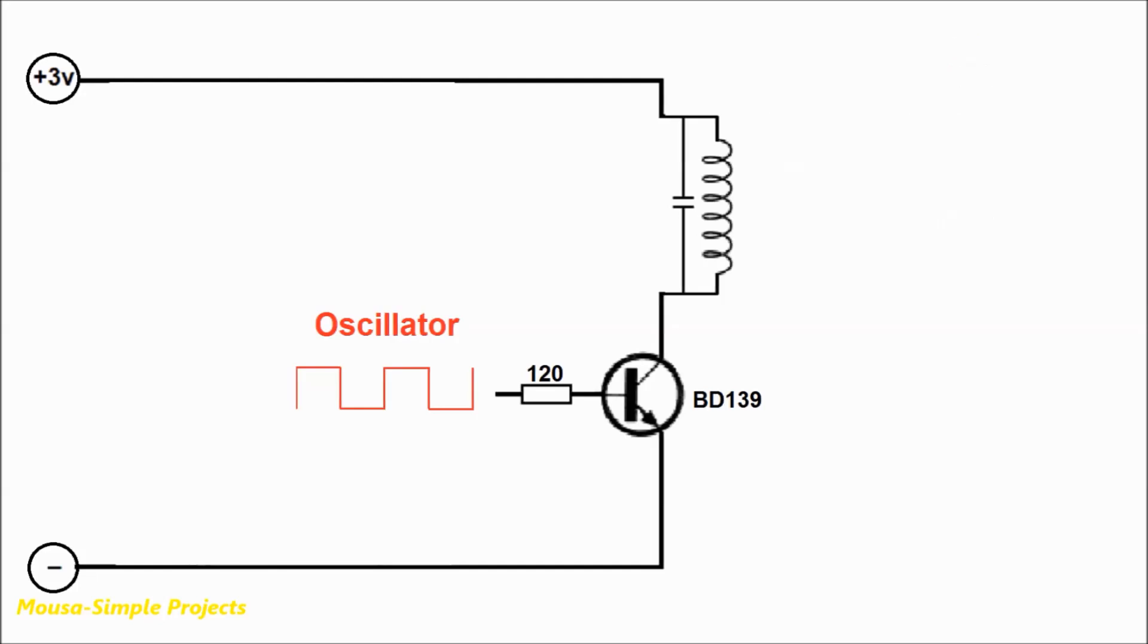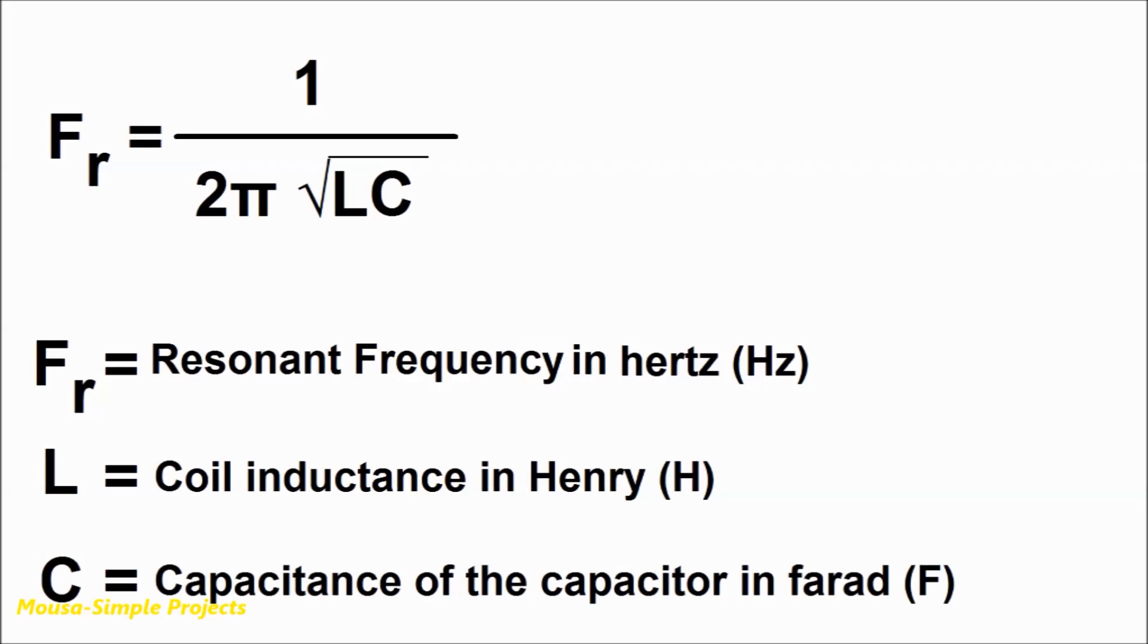But how much should be the frequency of the transistor switching? The switching frequency should be equal to the resonance frequency of this inductor and this capacitor. It has to be calculated by this formula.